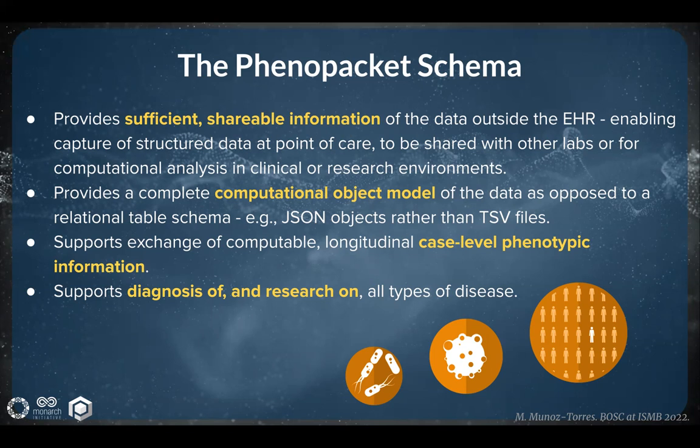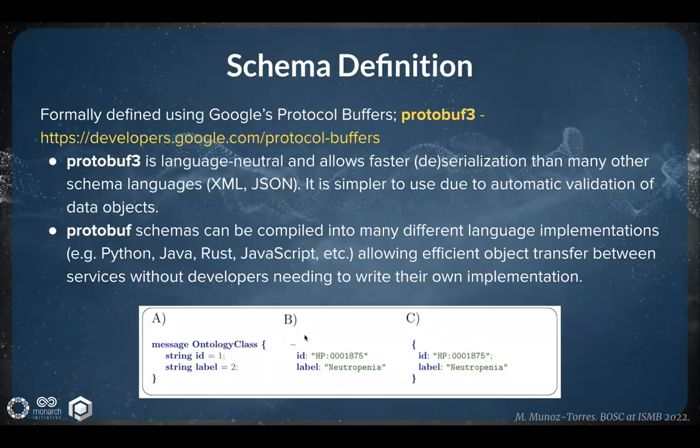The schema supports the exchange of computable longitudinal case-level phenotypic information, and it supports the diagnosis and research on all types of disease, including Mendelian and complex genetic diseases, cancers, and infectious diseases. The schema is formally defined using Google's Protocol Buffers version 3, or Protobuf 3.